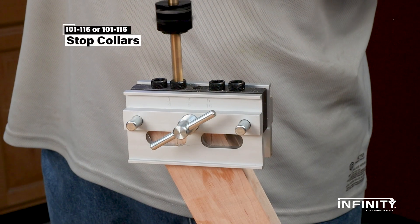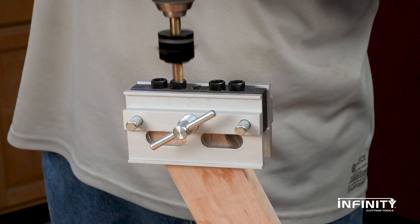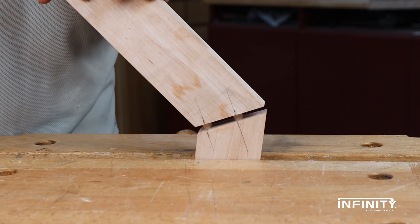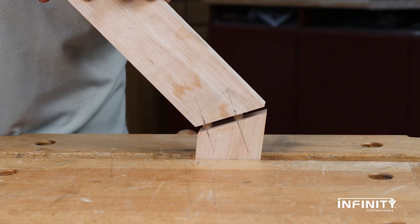Use a drill stop collar to ensure that you drill your holes to your desired depths. Drill your dowels in both mating faces of your joints. Insert your dowels and ensure the proper fit before gluing and clamping.